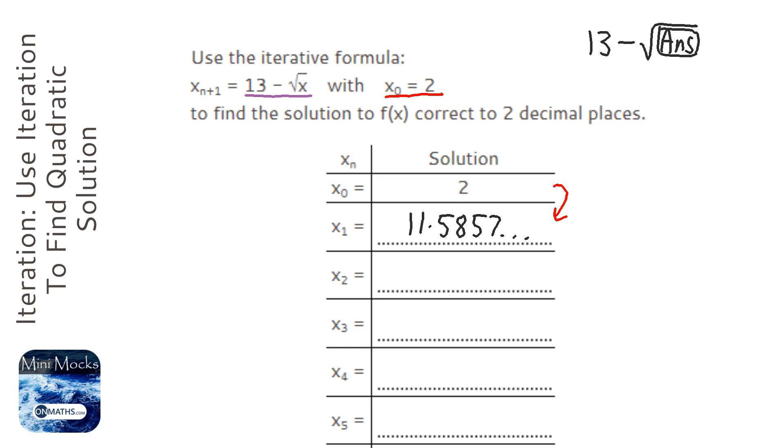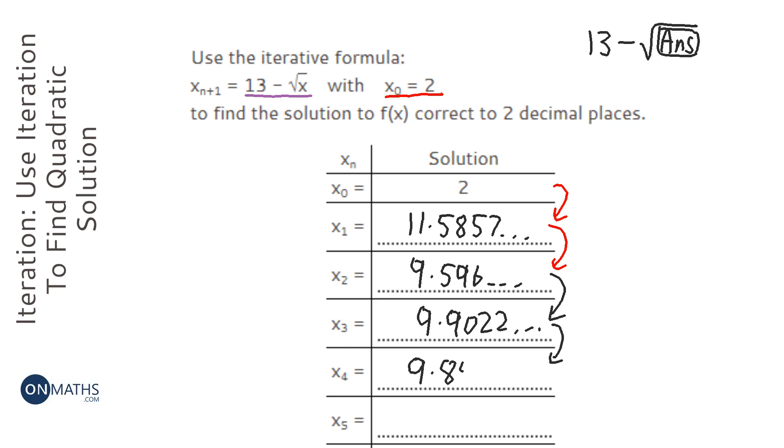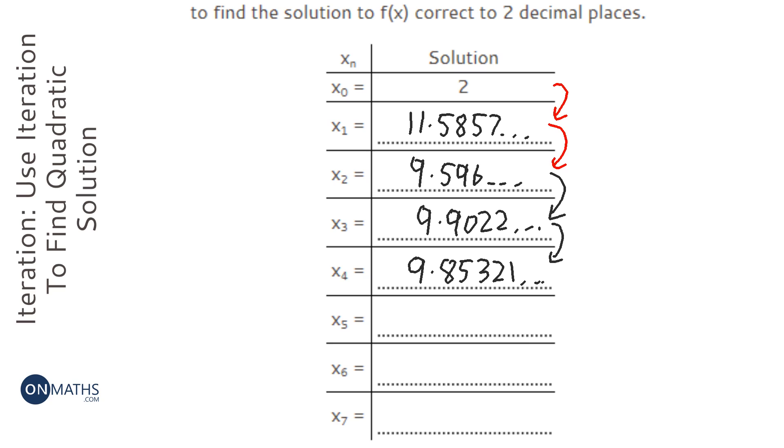The clever bit is if you press equals again it will give you the next answer. This time 9.596, and just keep pressing equals: 9.9022, equals again 9.85321, equals again 9.86. It's getting close, you can see.